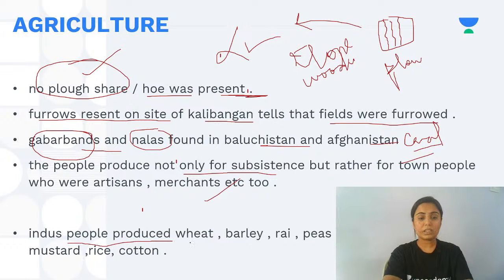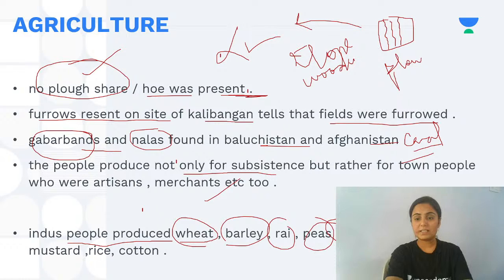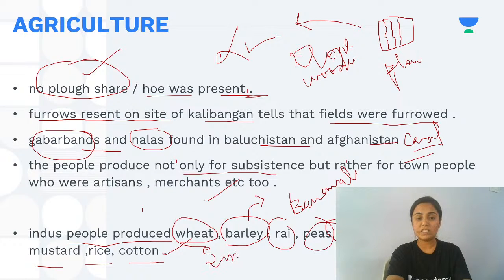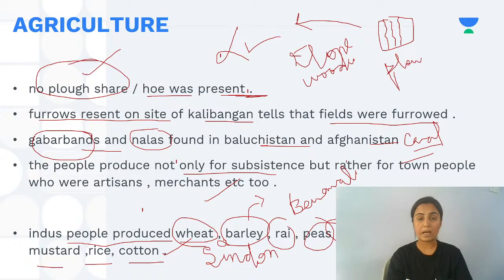Indus people produced wheat, barley, rye, peas, sesame, mustard, rice, and cotton. The most eminent quality barley was found from Banawali, a site in Haryana. They also grew cotton — the Greeks called them Sindon, indicating they were the earliest community to grow cotton.